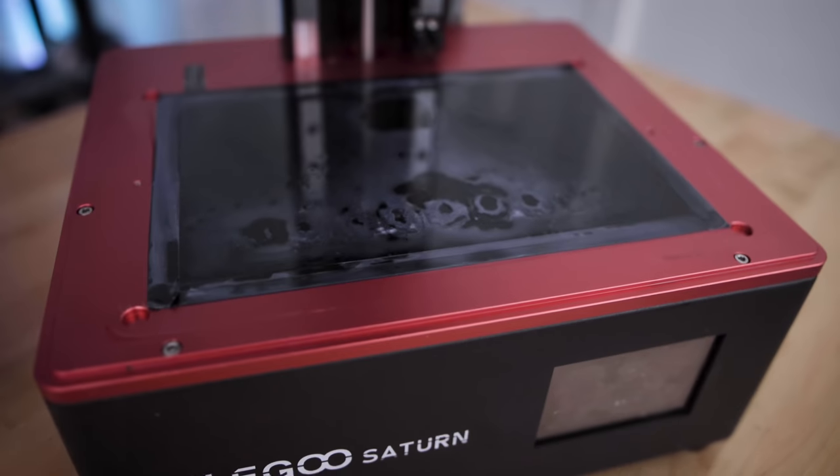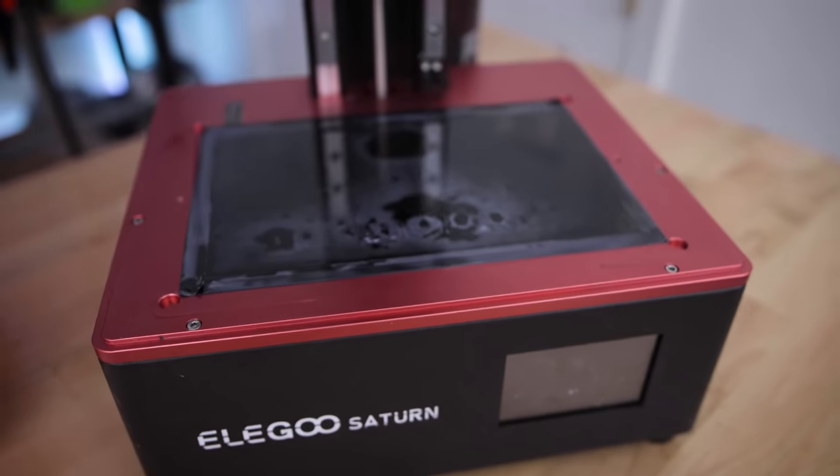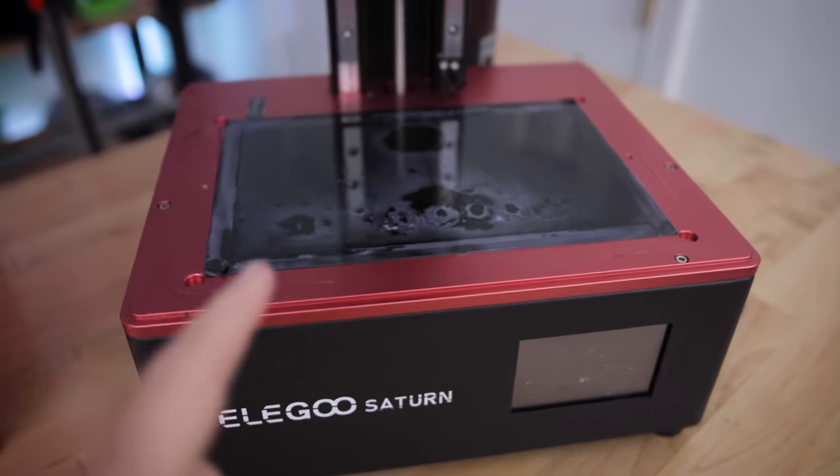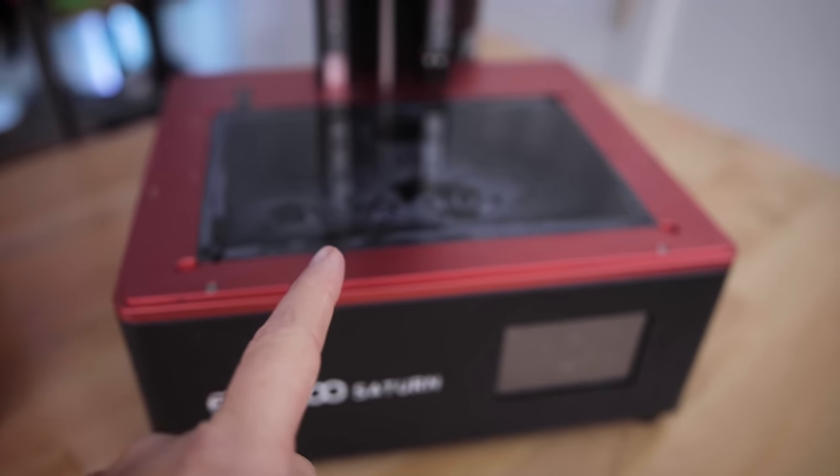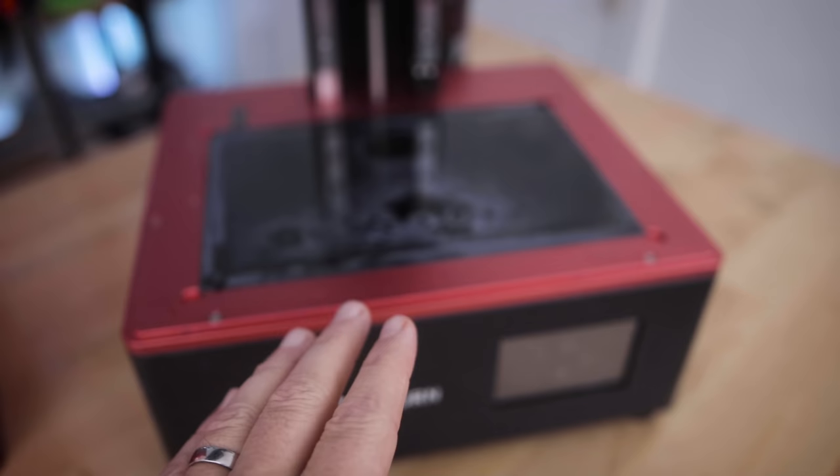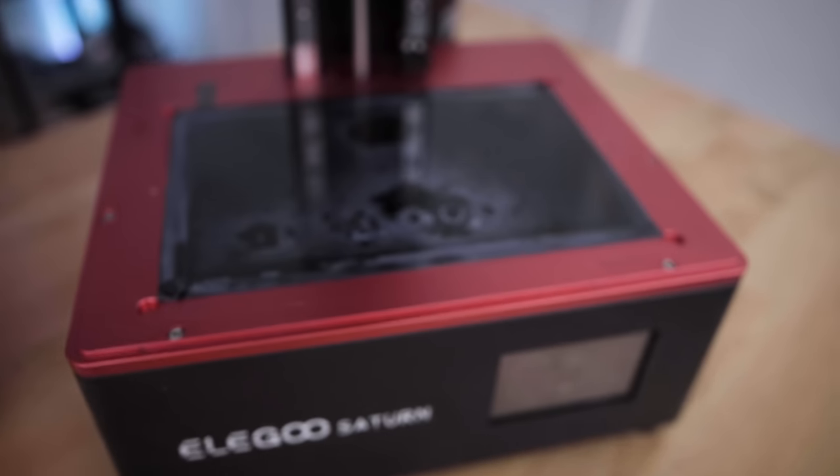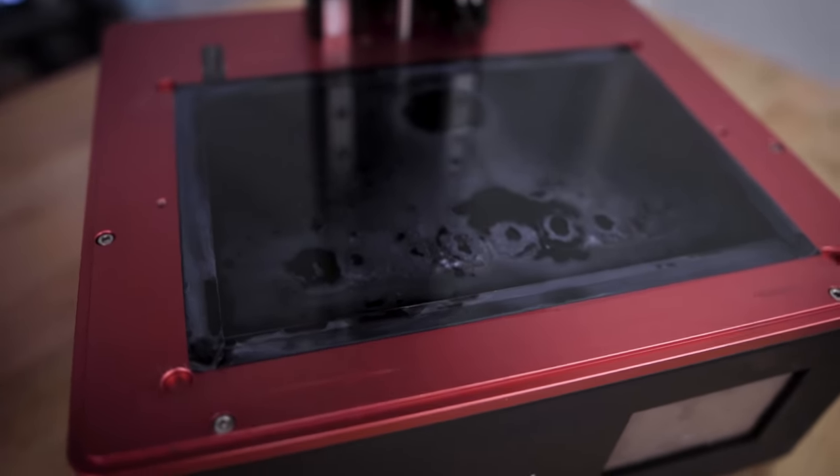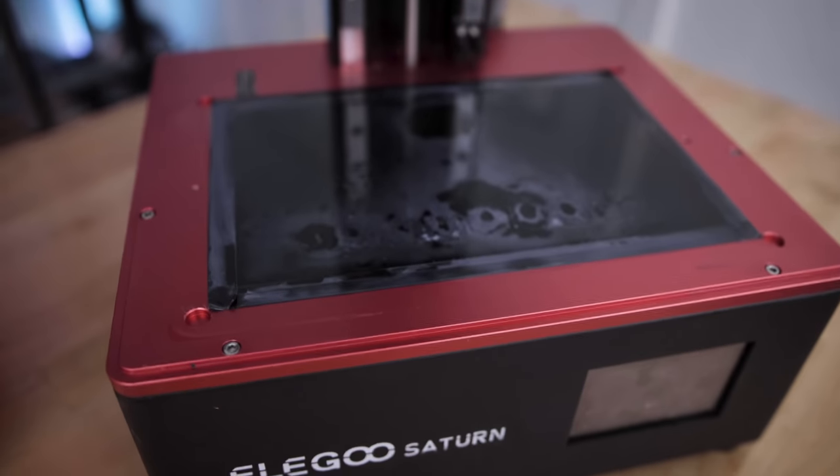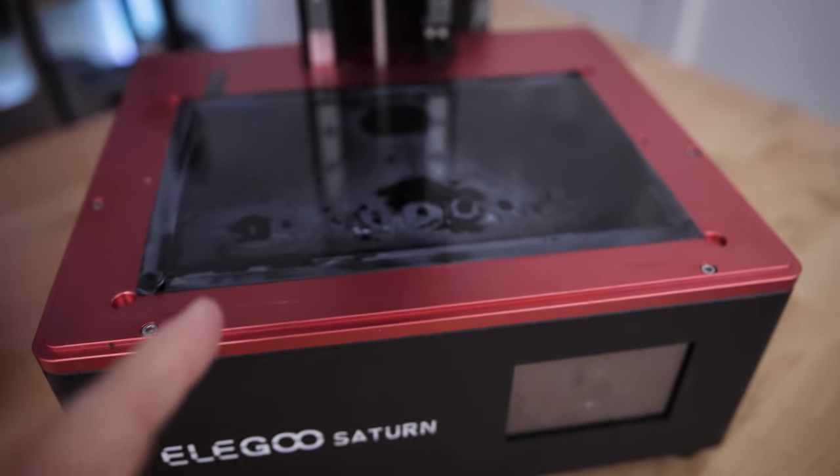All right, here's something fun that I was hoping would never happen, especially on my Elegoo Saturn. I unfortunately had my FEP sheet leak. The vat leaked some resin onto the screen and some of it is now cured on the screen. Some of it's still wet here.